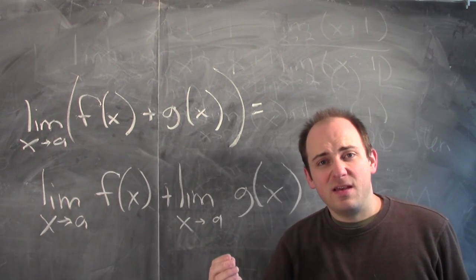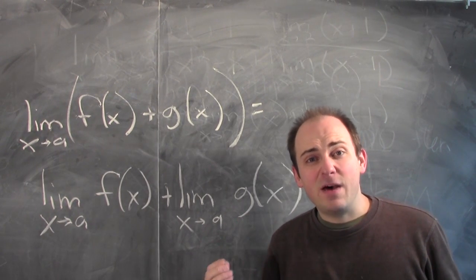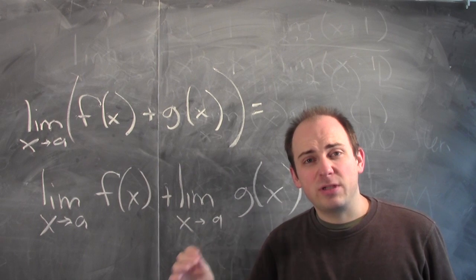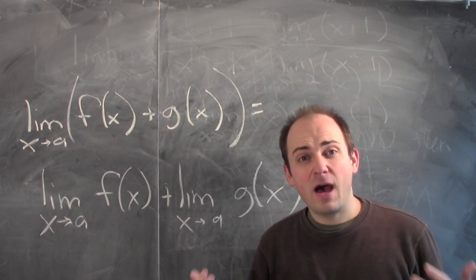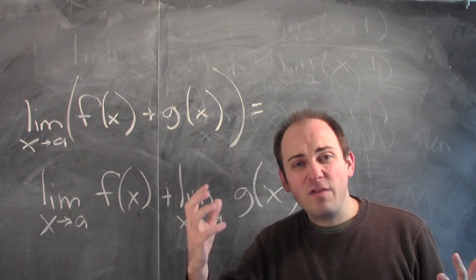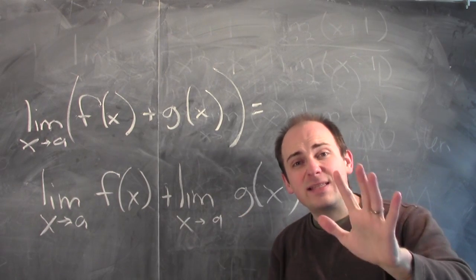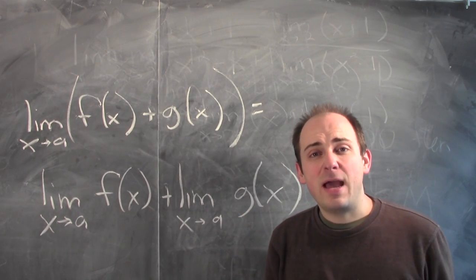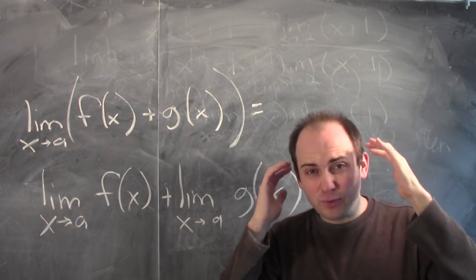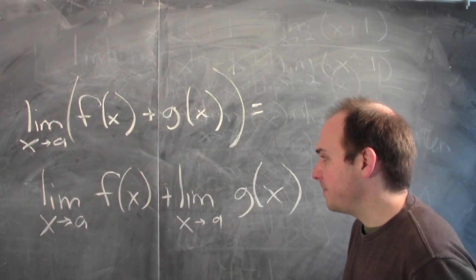Fundamentally, limits are promises. When I tell you the limit of f of x equals l as x approaches a, I'm promising you something. I'm promising you that I can get f of x as close to l as you like, as long as x is close enough to a. Thinking of limits as promises helps us to understand statements like these.